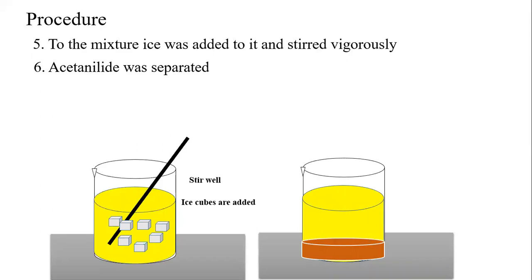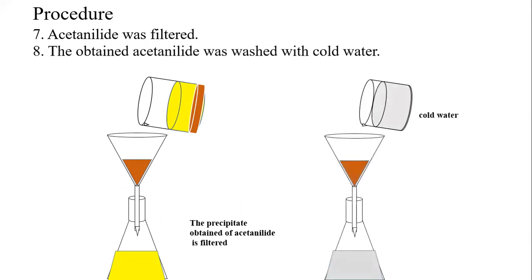What we will do now, it has been settled down, so we need to filter it. We will take a filter and a conical flask and we will put a filter paper along the funnel and we will try to filter the precipitate of acetanilide that has formed.